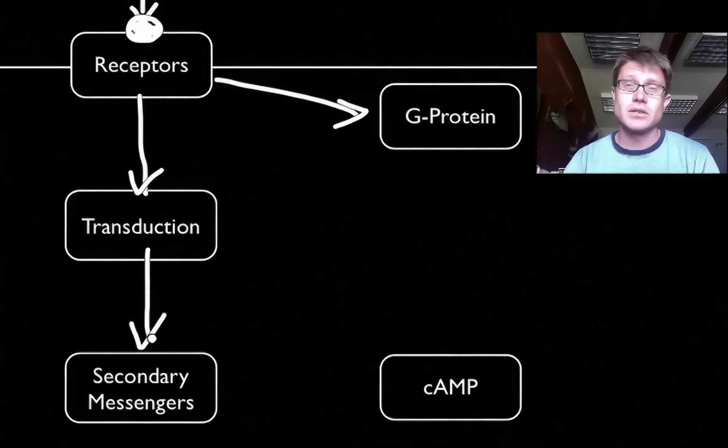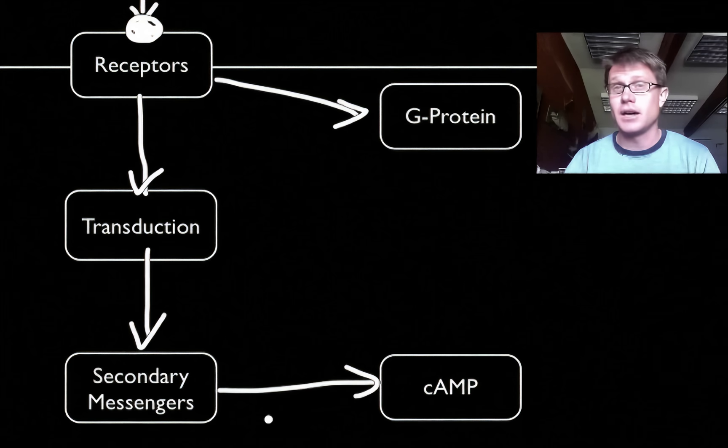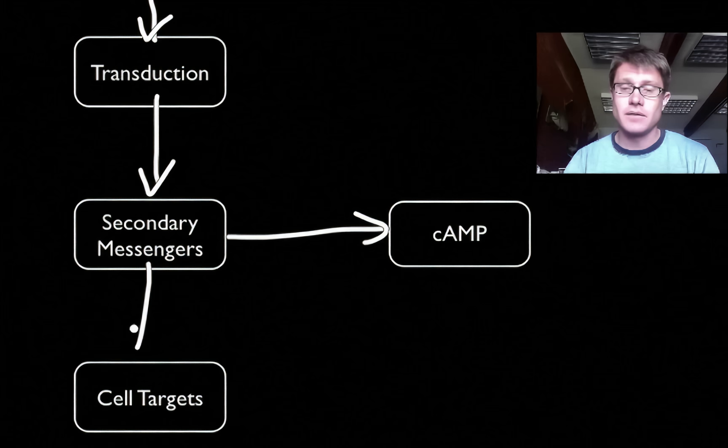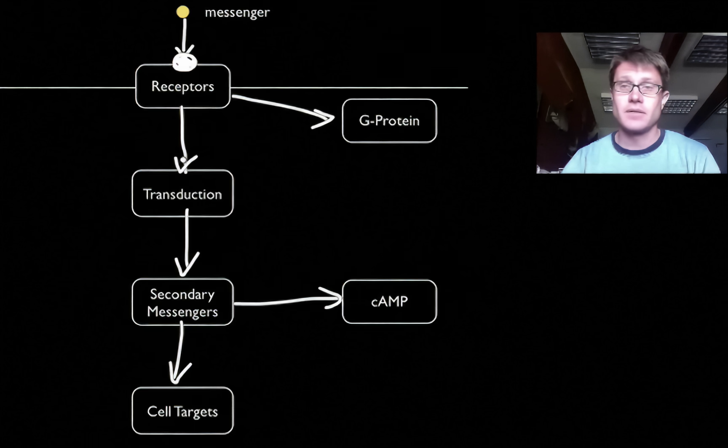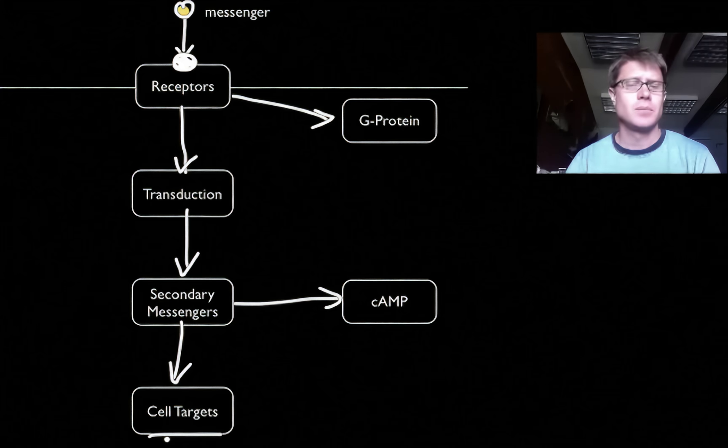We use what are called secondary messengers. The one that I'll give you an example of is called cyclic AMP. It's a very common messenger in cells. And then that will eventually target the cells. In this case it's going to target cells in the liver and it's going to make them release glucose from glycogen. And so that's kind of a signal transduction pathway. It starts with a message and then it eventually has some kind of a target within the cell.